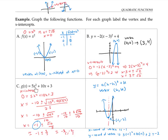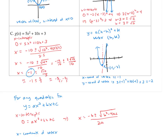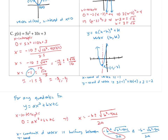The reasoning we used to find the vertex in this example can be generalized to find a vertex formula for any quadratic function. For any quadratic y = ax² + bx + c, we can find the x-intercepts by setting y = 0 and using the quadratic formula. Since the x-coordinate of the vertex is halfway between the two x-intercepts, it has to be exactly −b/(2a). Once we find the x-coordinate, we can easily find the y-coordinate by plugging it into the original function.